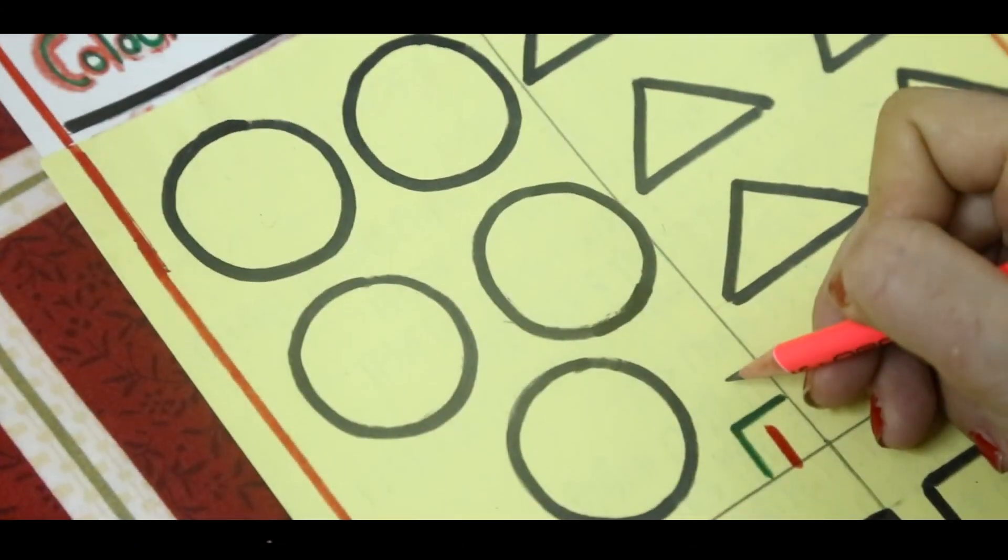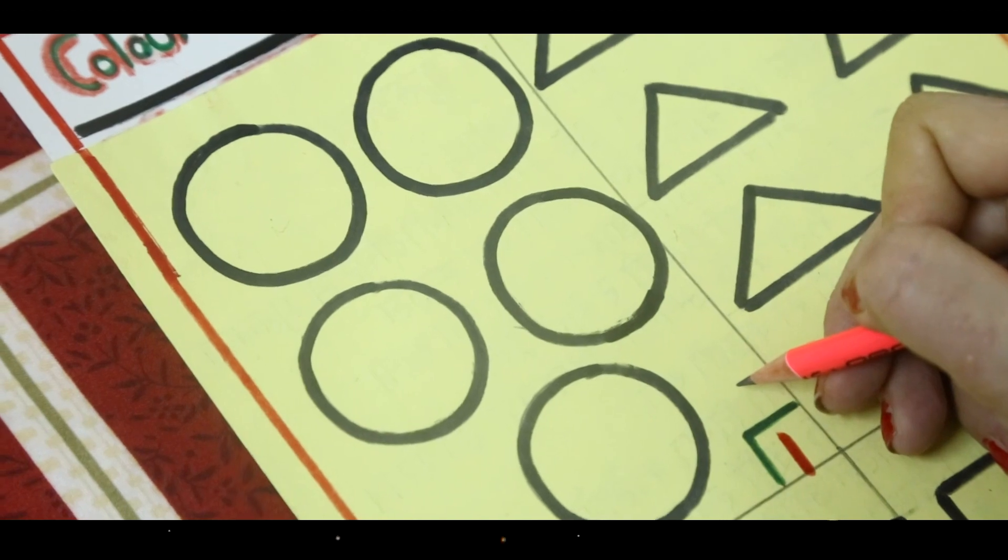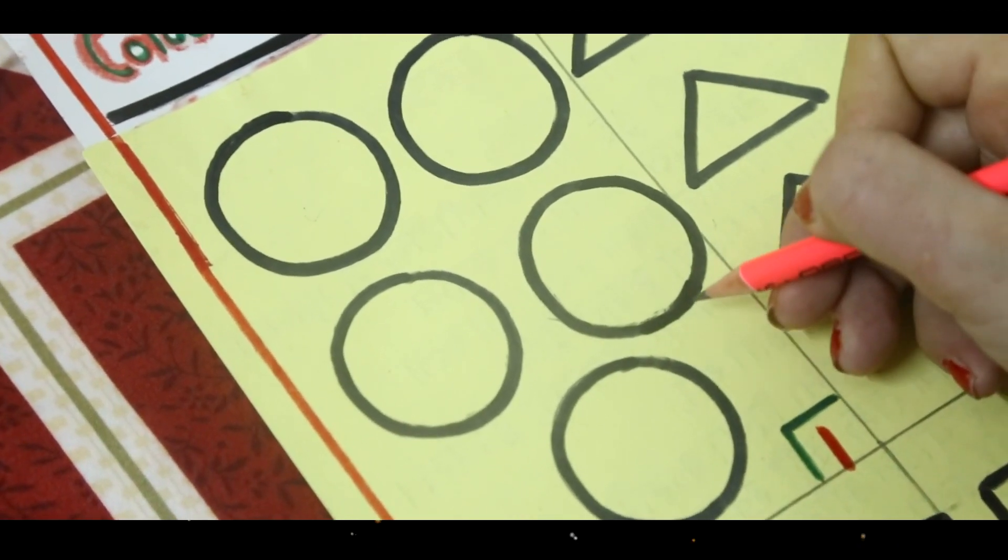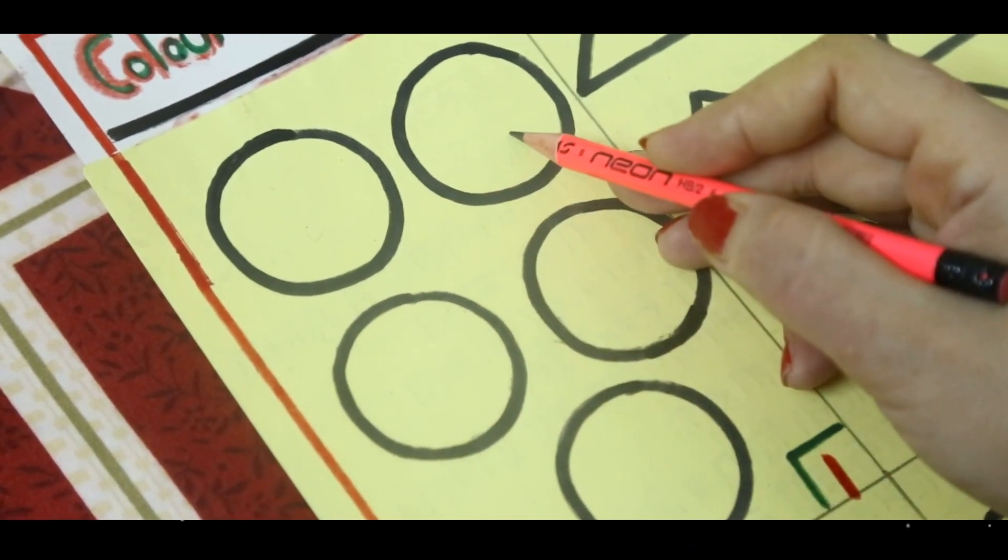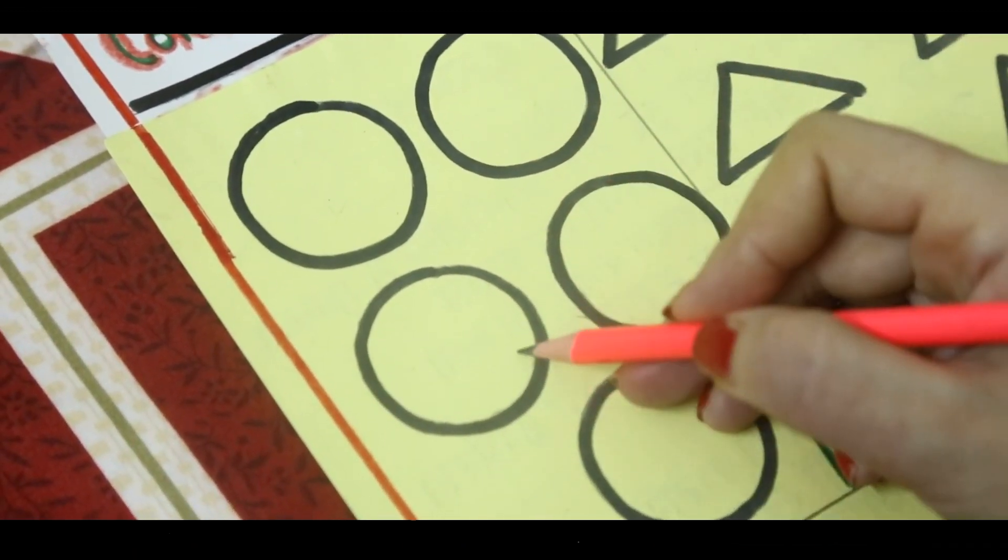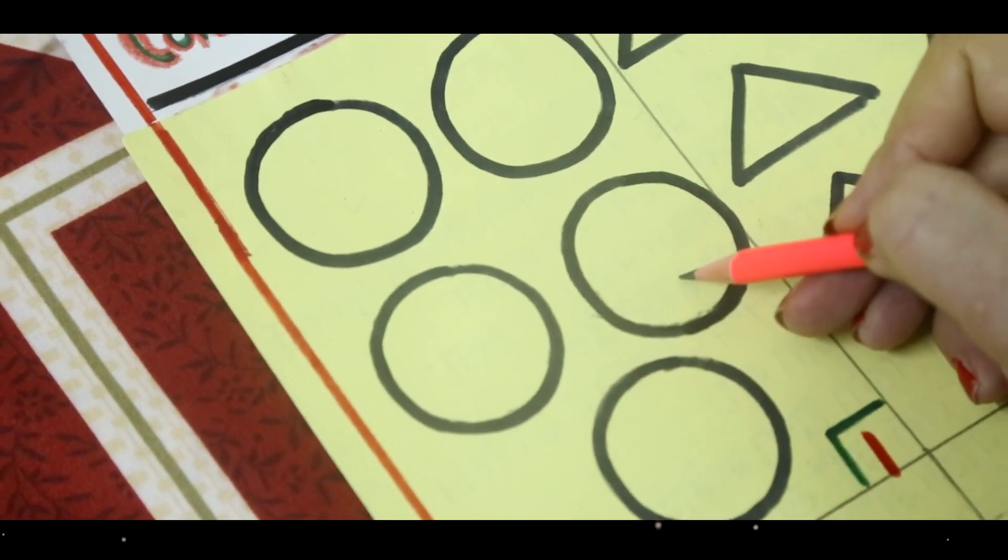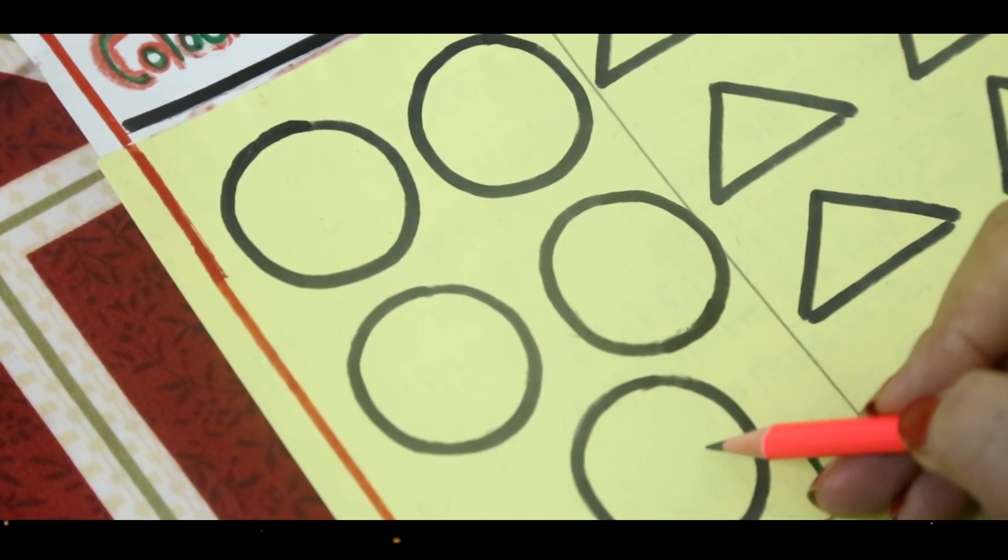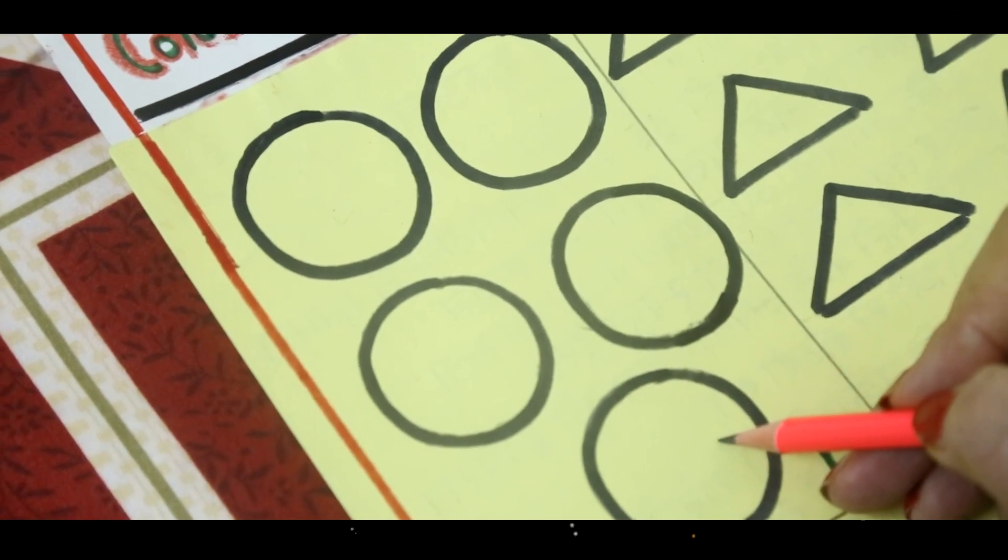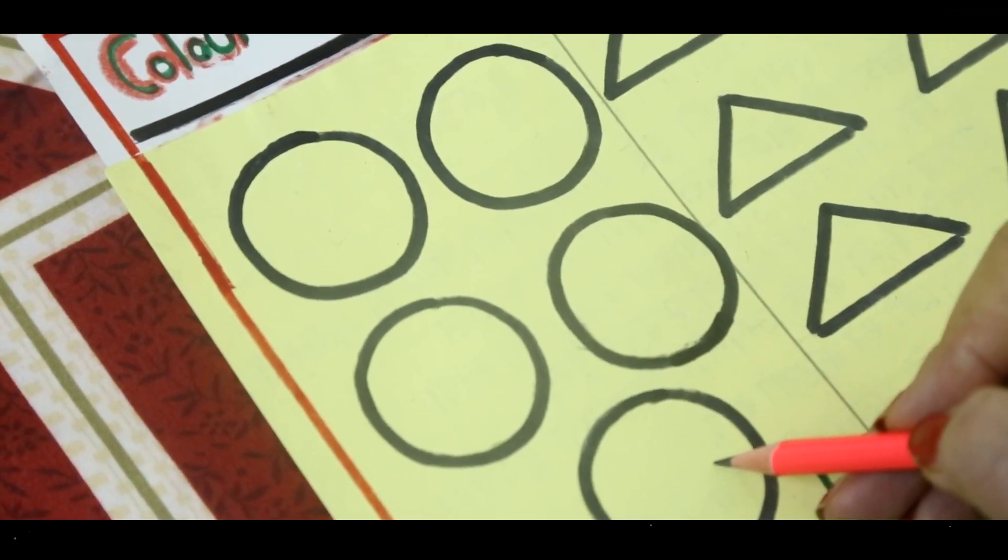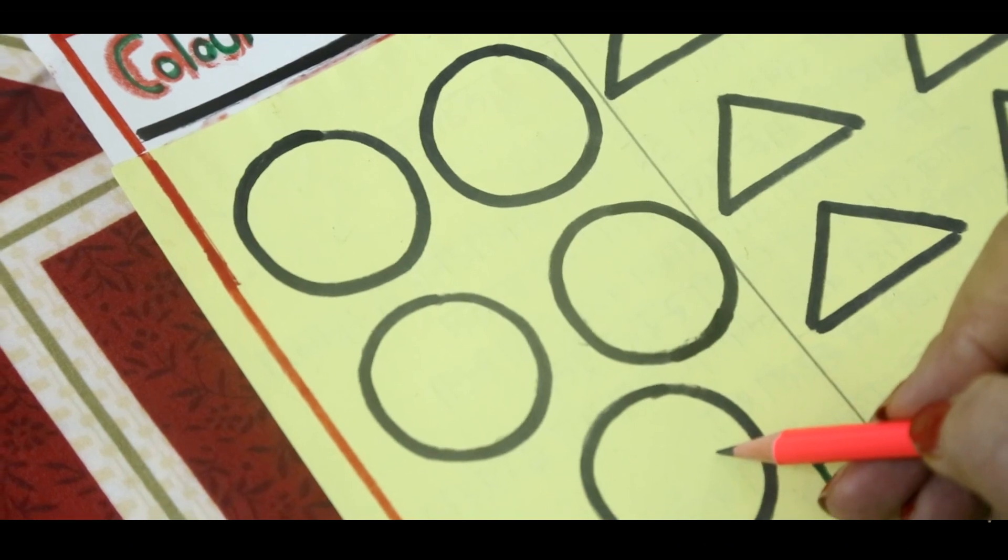In group one, we have circles. So, let's count with our circles. One, two, three, four and five. Now, keep in mind how many circles do you have? You have five circles in group one.